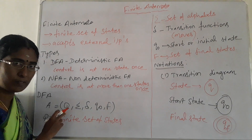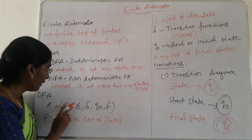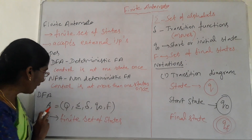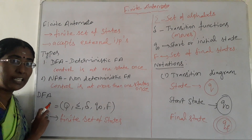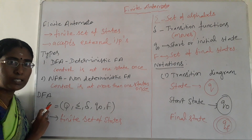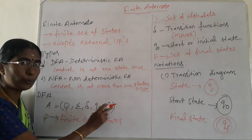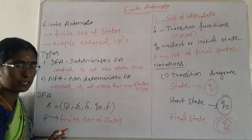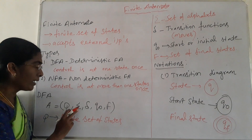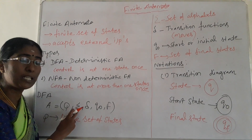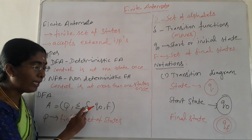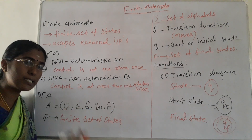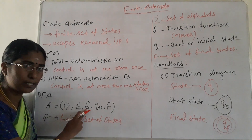The definition consists of a 5-tuple: A = (Q, Σ, δ, Q0, F). Here A is the name of the DFA. Q is defined as the finite set of states. Σ is the set of alphabets. δ is the transition function — how we are moving from one state to another.